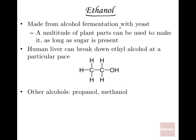Ethanol is made through alcohol fermentation with yeast. If you look at how breweries make beer or wineries make wine, it's yeast. There are lots of different types of yeast — usually they're actively adding yeast to make it happen, though some beers use natural fungi already present with the plant material. Typically, yeast does alcohol fermentation rather than lactic acid fermentation like we do.